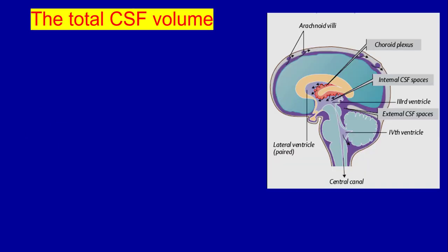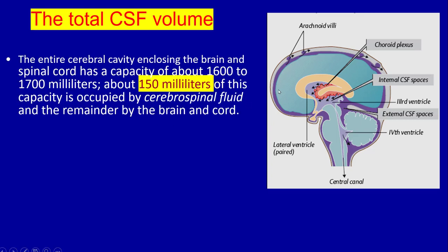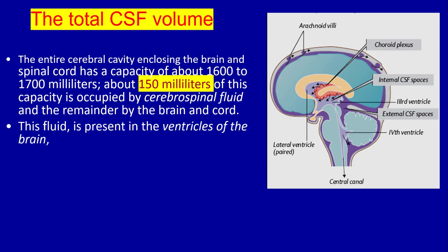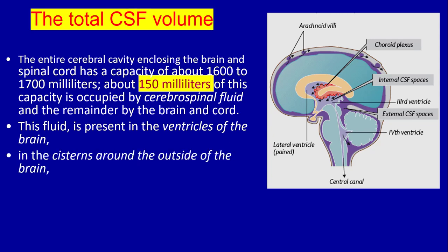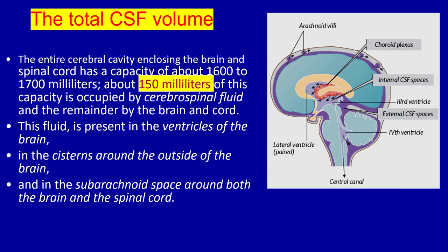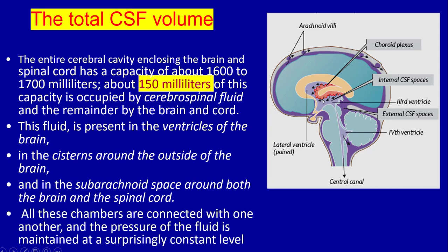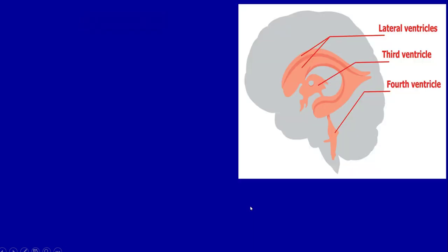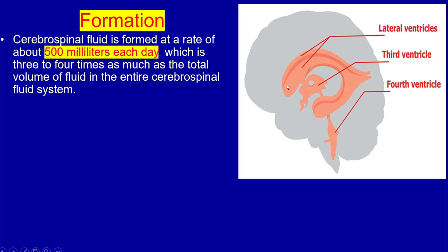The total CSF volume: the entire cerebral cavity including the brain and spinal cord has a capacity of about 1600 to 1700 milliliters. About 150 milliliters of this is occupied by the cerebrospinal fluid, and the remainder by the brain and cord. This fluid is present in the ventricles of the brain, in the cisterns around the outside of the brain, and in the subarachnoid space around both the brain and the spinal cord. All these chambers are connected with one another and the pressure of the fluid is maintained at a surprisingly constant level.